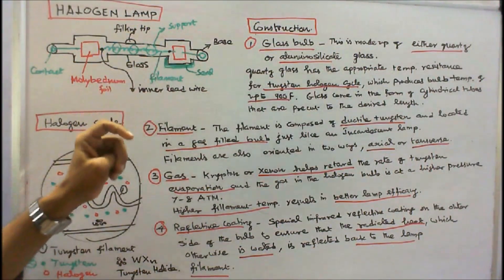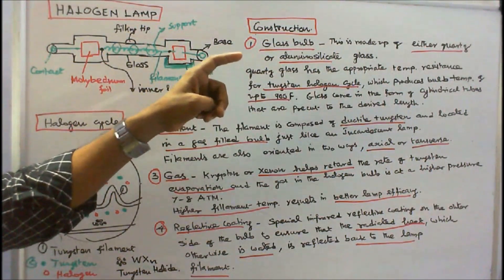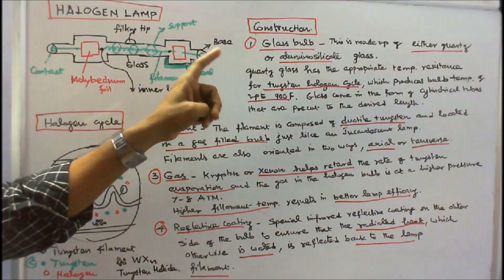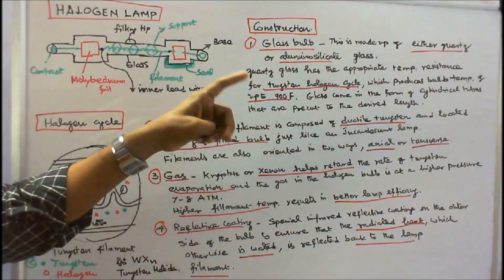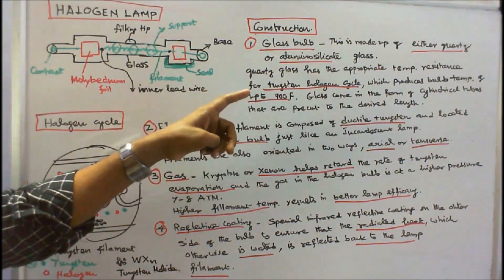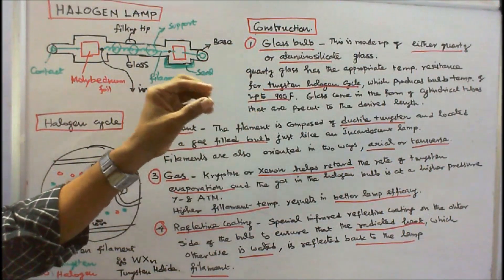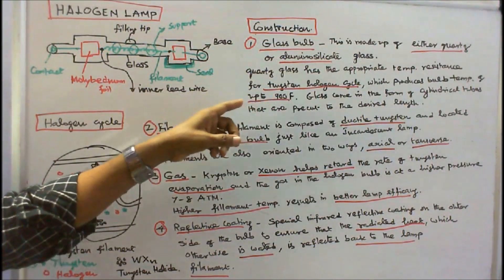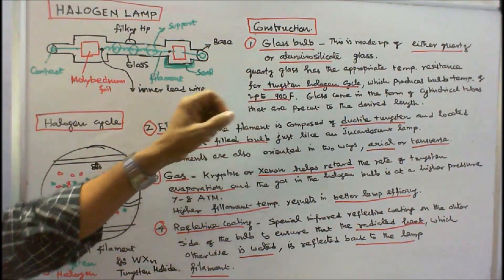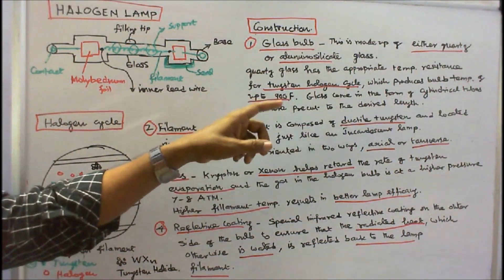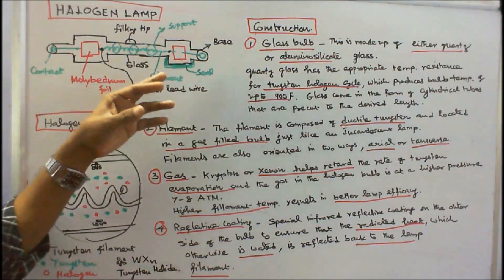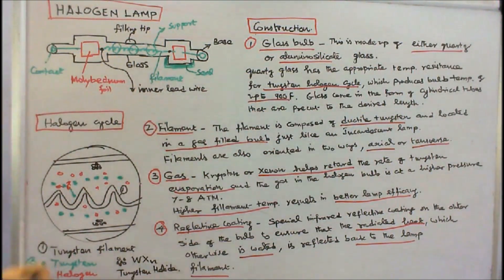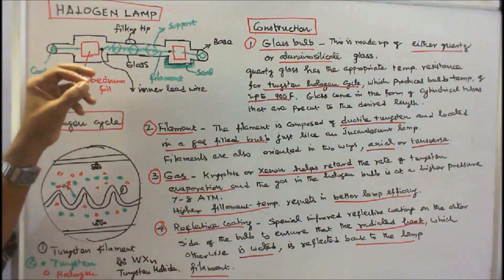Component one is the glass bulb, made of either quartz or aluminum silicate glass. Quartz glass has the appropriate temperature resistance for the tungsten halogen cycle, which produces bulb temperatures of up to 900°F. Glass comes in the form of cylindrical tubes pre-cut to the desired length. Component two is the filament, composed of ductile tungsten and located in a gas-filled bulb, just like an incandescent lamp.